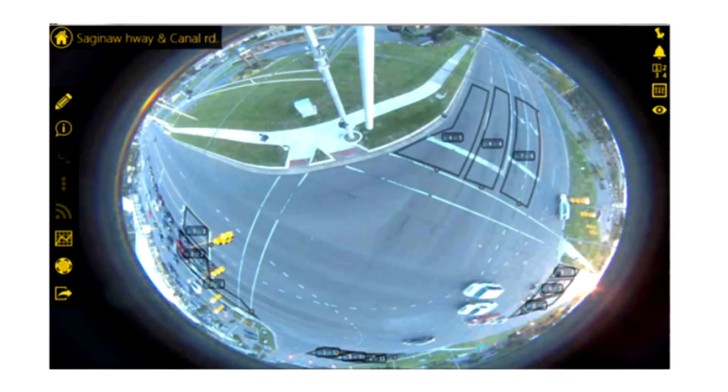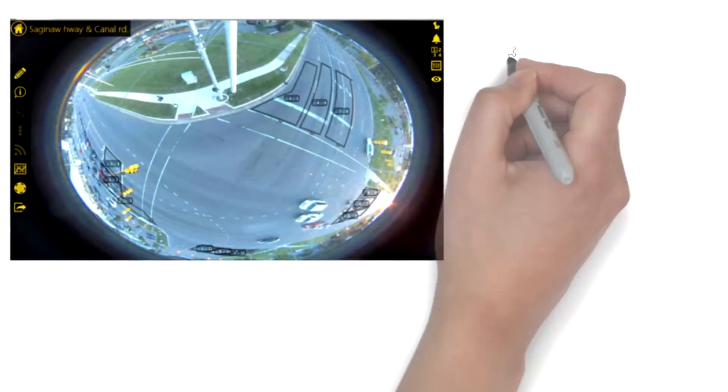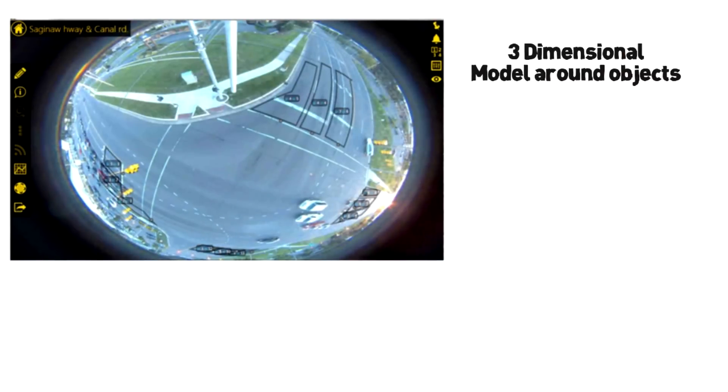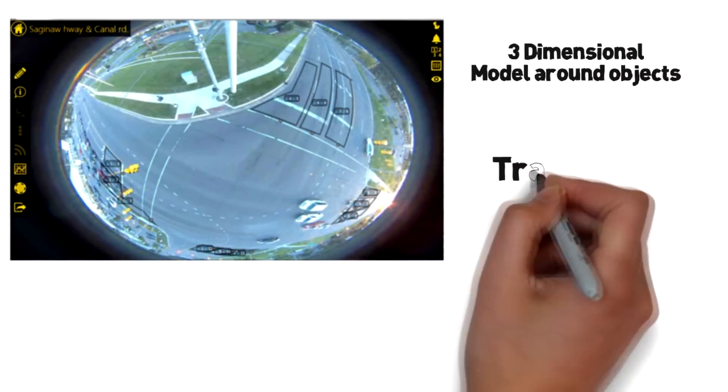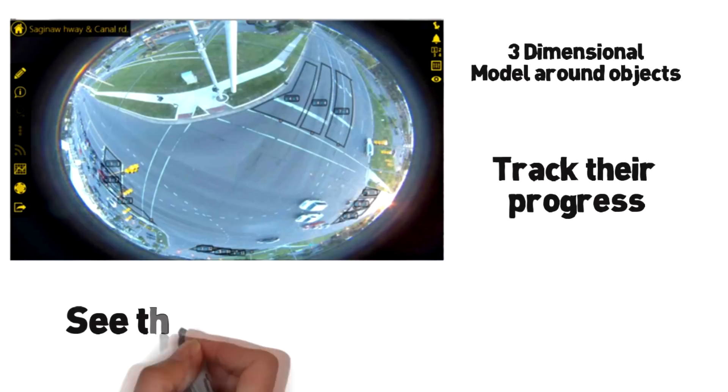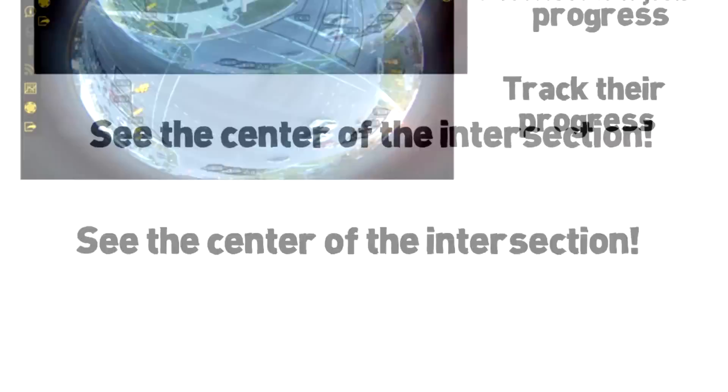GridSmart provides horizon-to-horizon views. Working much like your eyes, GridSmart Intelligence builds a three-dimensional model around objects coming into the field of view and tracks the object in and out of sight while letting you see the center of the intersection.